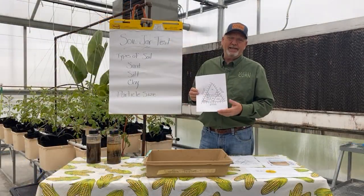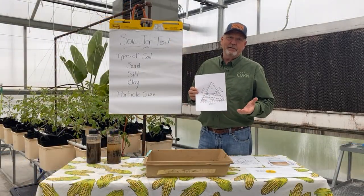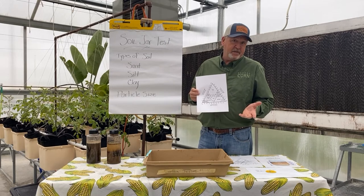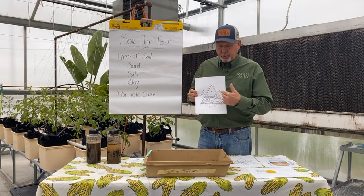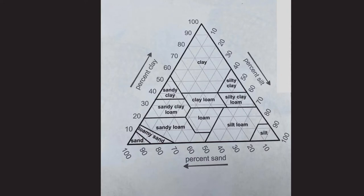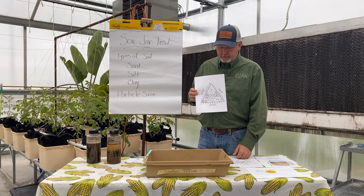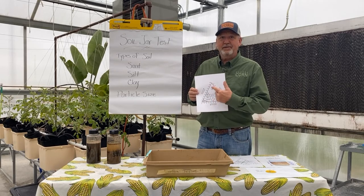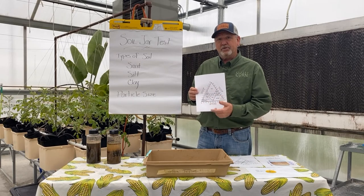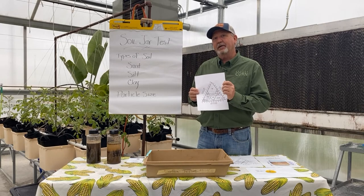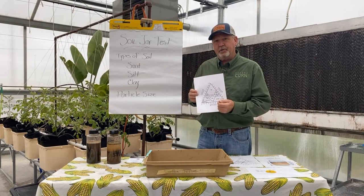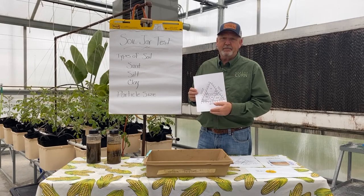Remember earlier, I said that these soils are a combination of all three types. We use a soil triangle to figure out what type of soil we have. There are 12 textures or soil compositions, and we can use this soil triangle to figure out exactly what kind of soil that we have on our property.